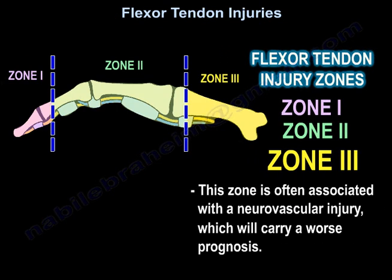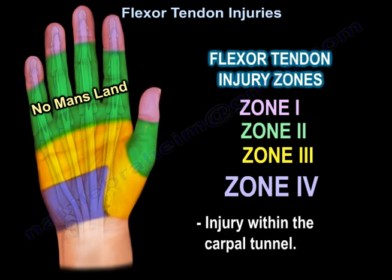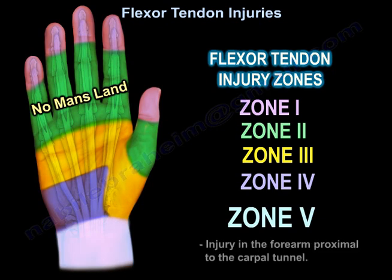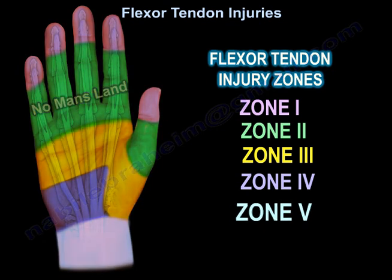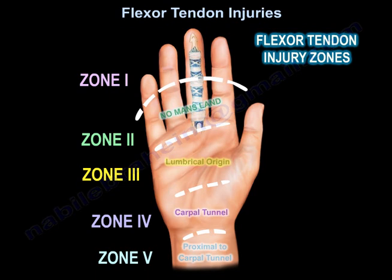Zone 3 is often associated with neurovascular injury, which carries a variable prognosis. Zone 4 is an injury within the carpal tunnel. Zone 5 is an injury in the forearm proximal to the carpal tunnel. A summary diagram shows all five zones of flexor tendon injury.